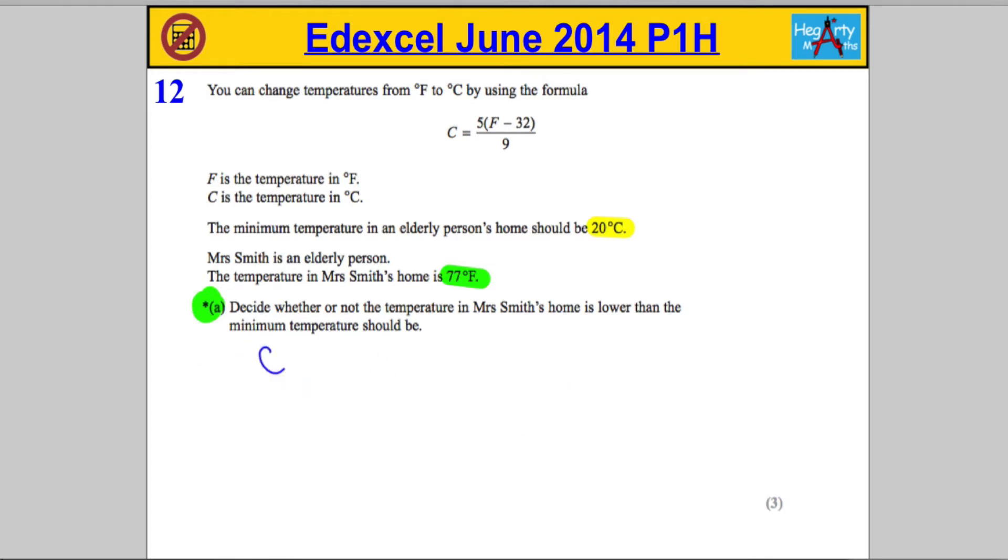So C is going to equal 5 times the number of degrees in Fahrenheit, which is 77 in Mrs. Smith's case. So 77, take away 32 over 9. Now let's tidy that up. 77 subtract 32 is going to be, I need to take 5 there and 4. So 45 over 9.